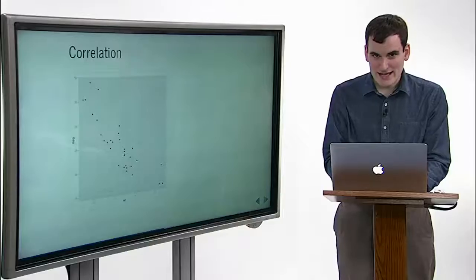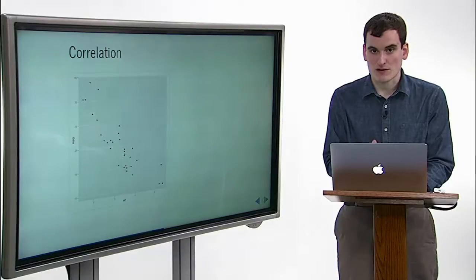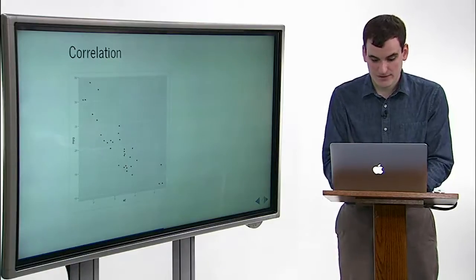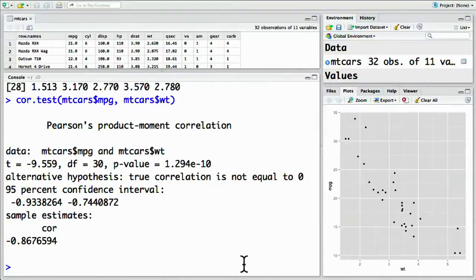The simplest way to test for a relationship between two variables is with a correlation test. This can be done with a cor.test function. So that's cor.test, parentheses, and then mtcars, dollar sign, mpg, getting the miles per gallon vector, and mtcars, dollar sign, wt, getting the weight vector from the correlation.